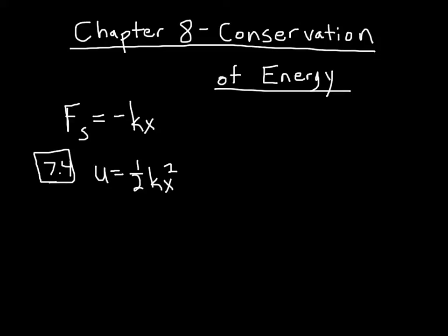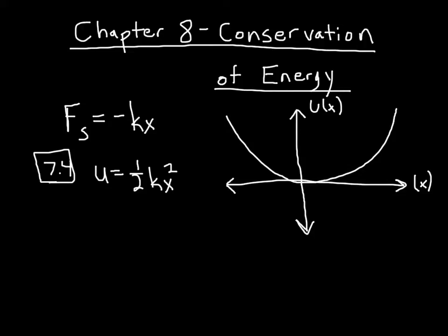And we can plot this in a graph. So we have a u-axis, u as a function of x, versus x position. And if we graph this, we see a little x squared shape. What this is telling us is how the energy of this particle, of this spring, changes as a function of its position.